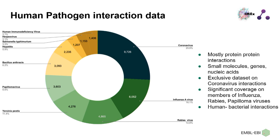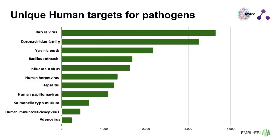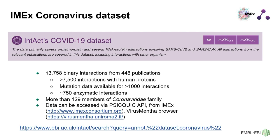We have published an exclusive dataset on the coronavirus. Right now we have more than 13,700-plus binary interactions captured from close to 450 publications. We have close to 9,500 interactions with human proteins, and mutation data is available for more than 1,000 interactions.